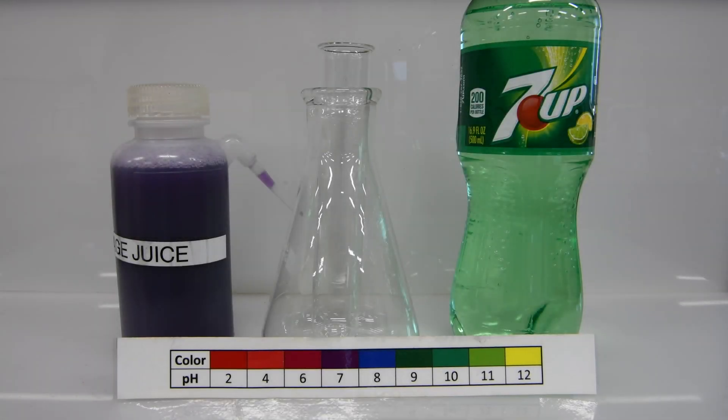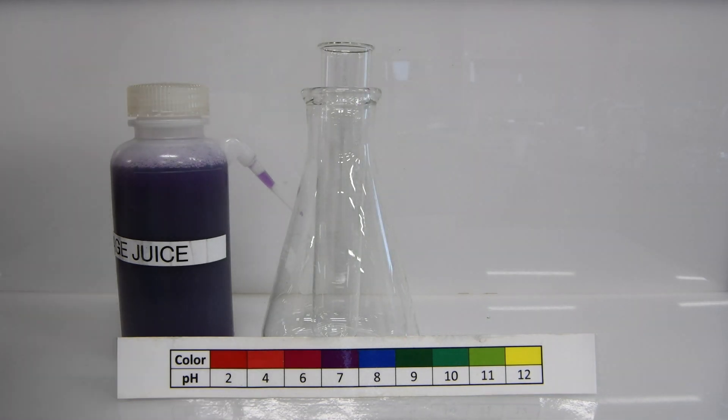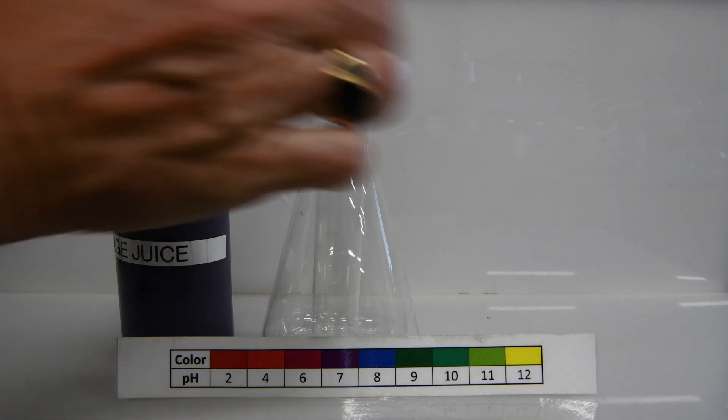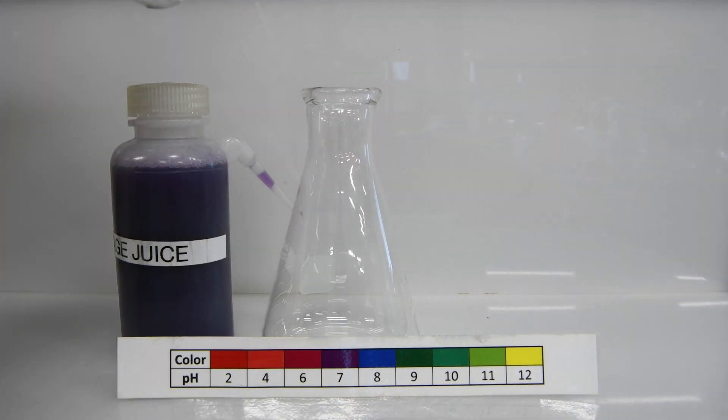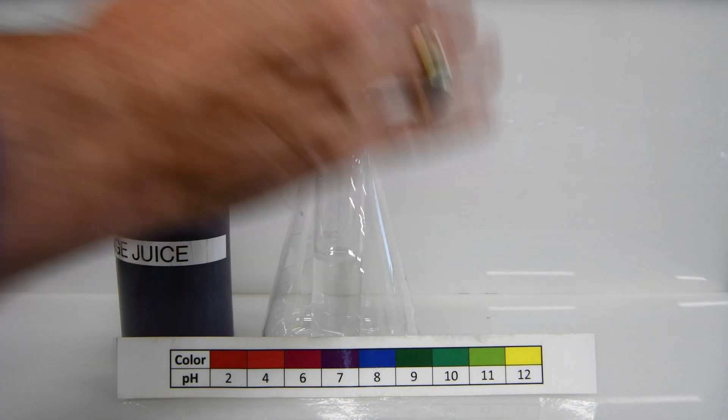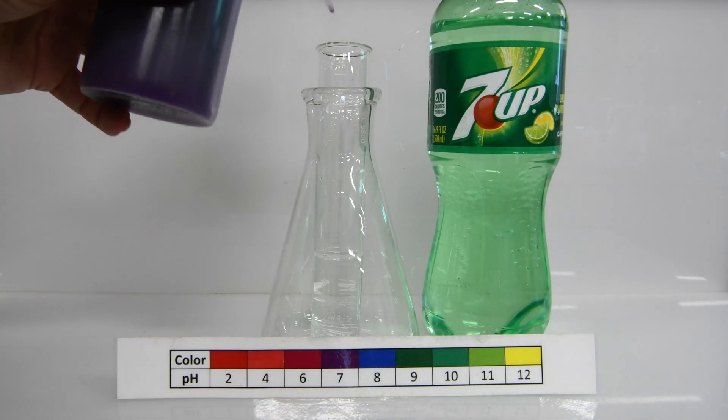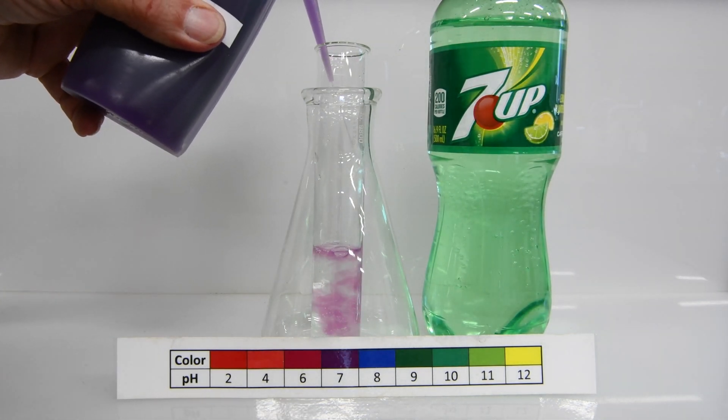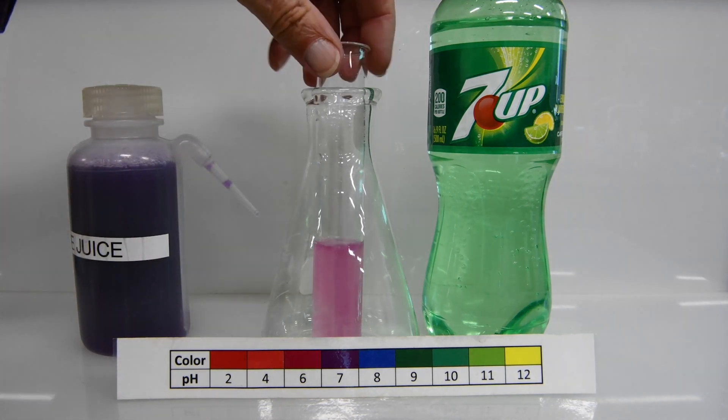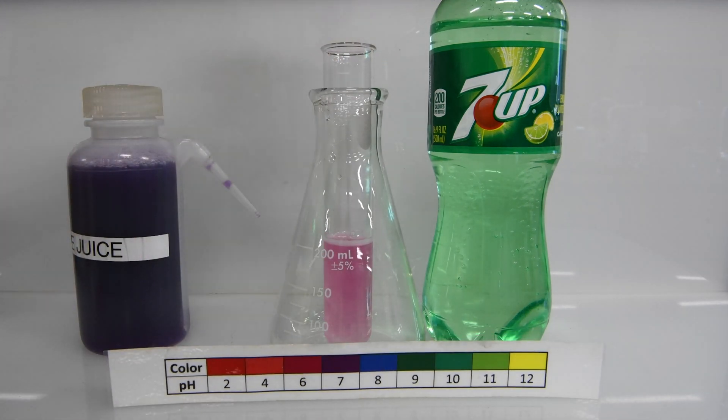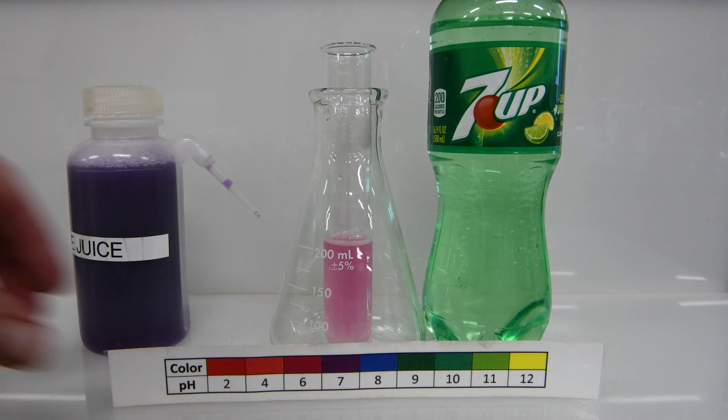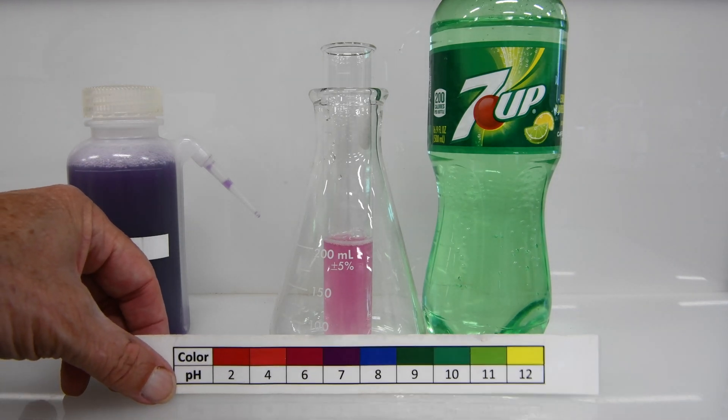The first sample we're going to test will be 7-Up. So let's go ahead and add a sample to the test tube. Now we'll add just enough cabbage juice so we can clearly see the color change. And it looks like it's formed a lovely reddish color. So I'll leave it to you to use the color chart and determine what the pH is.